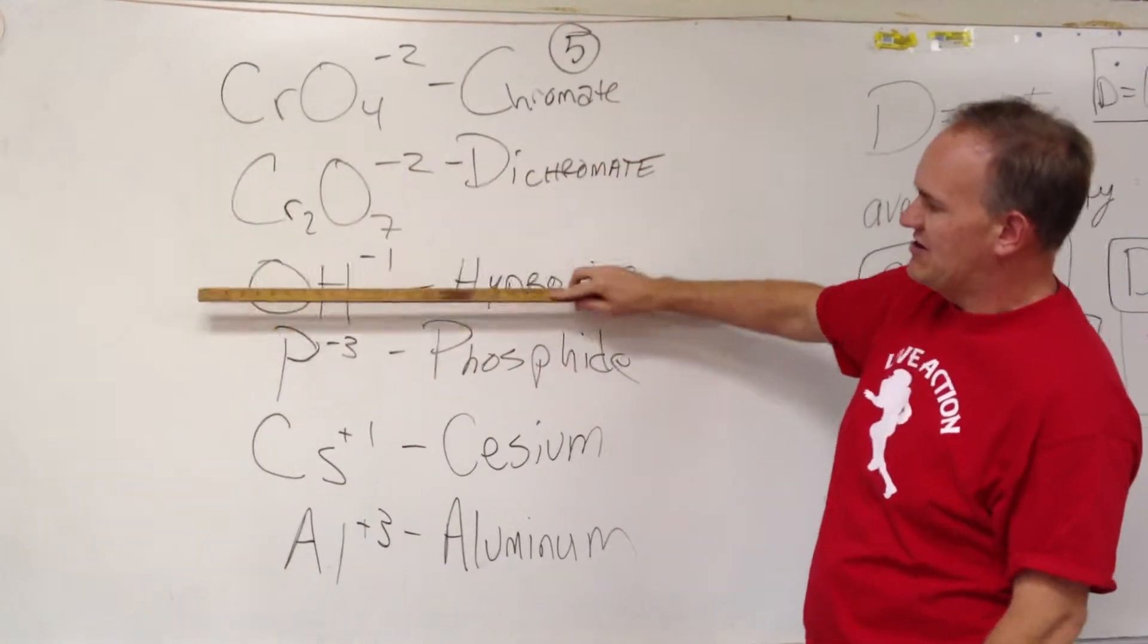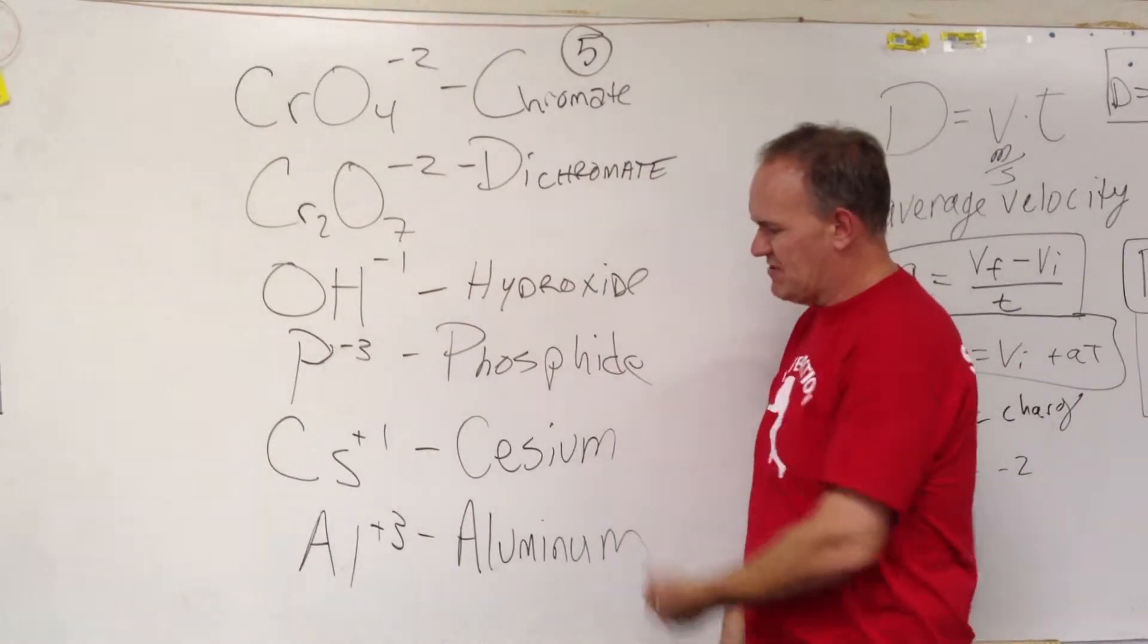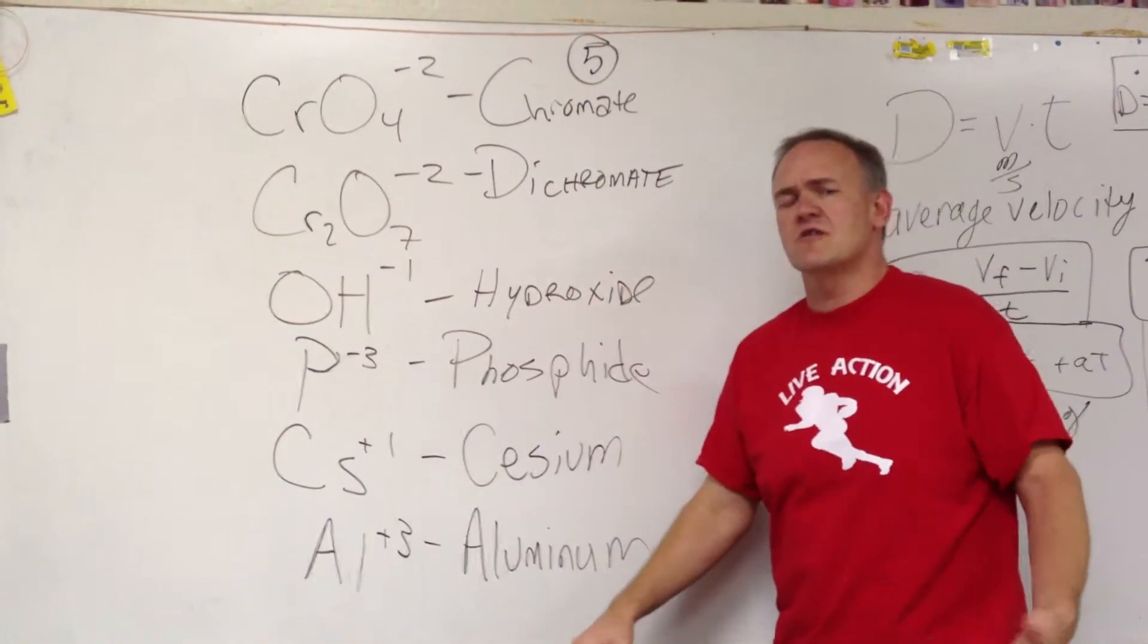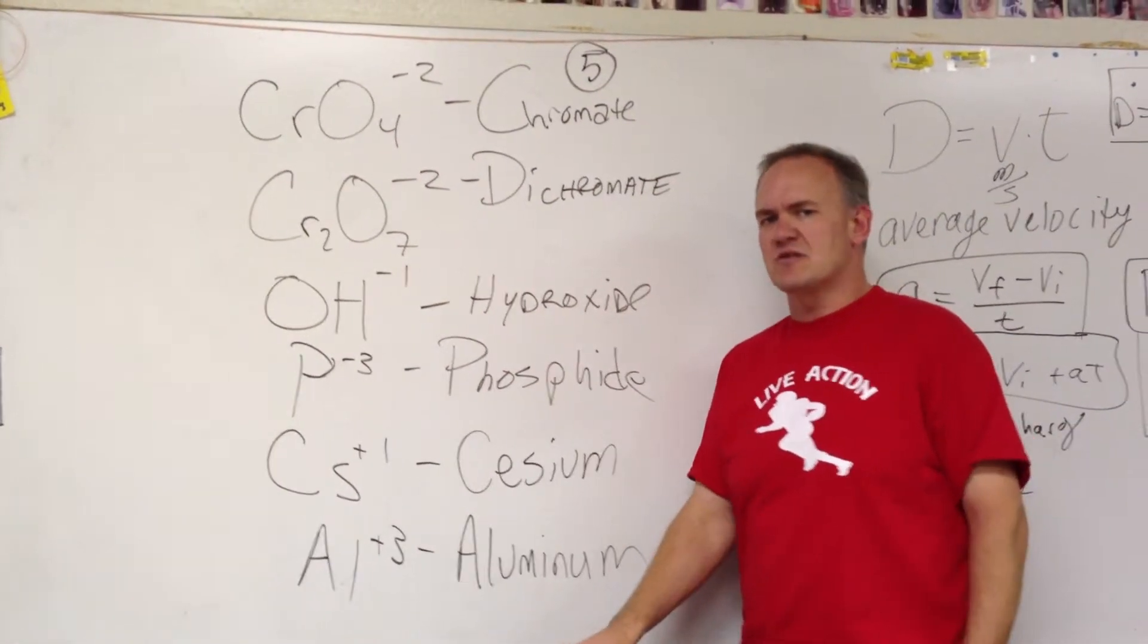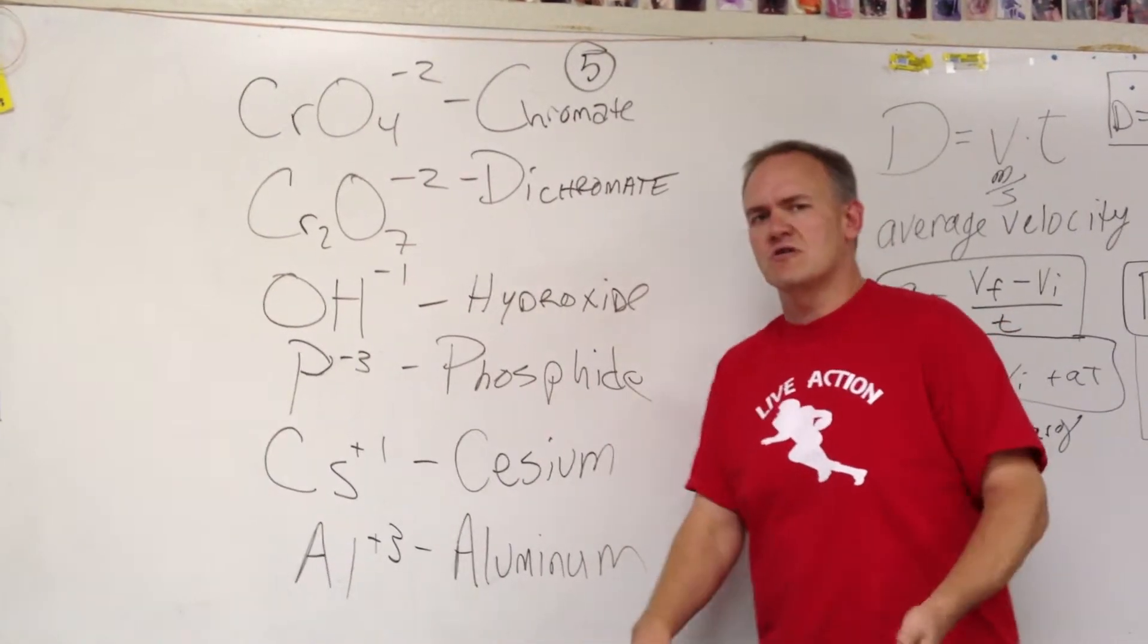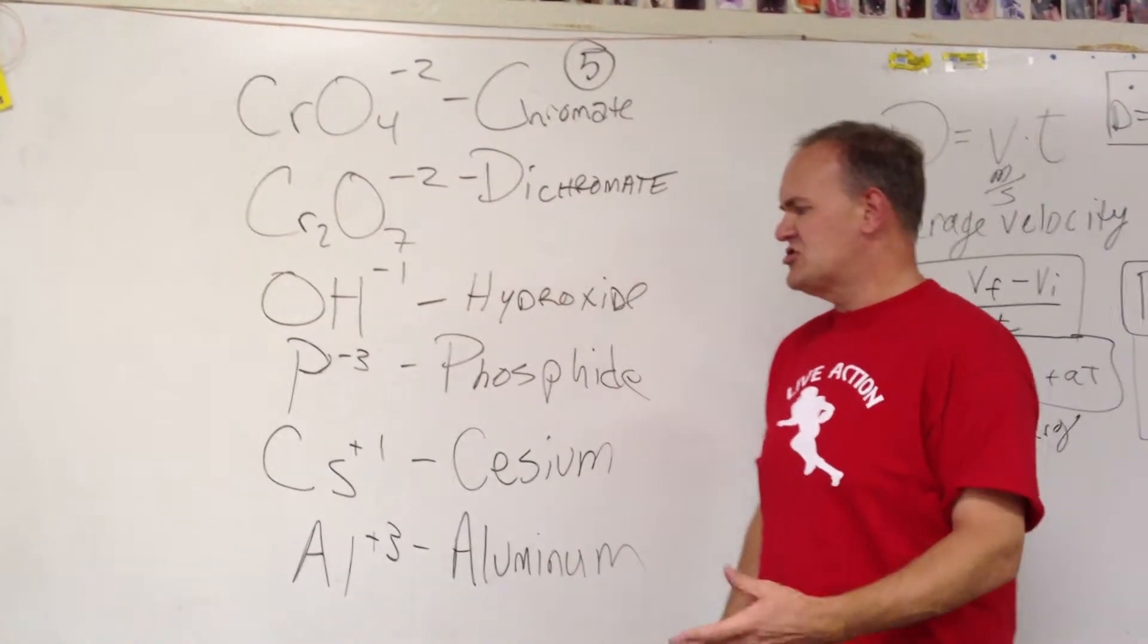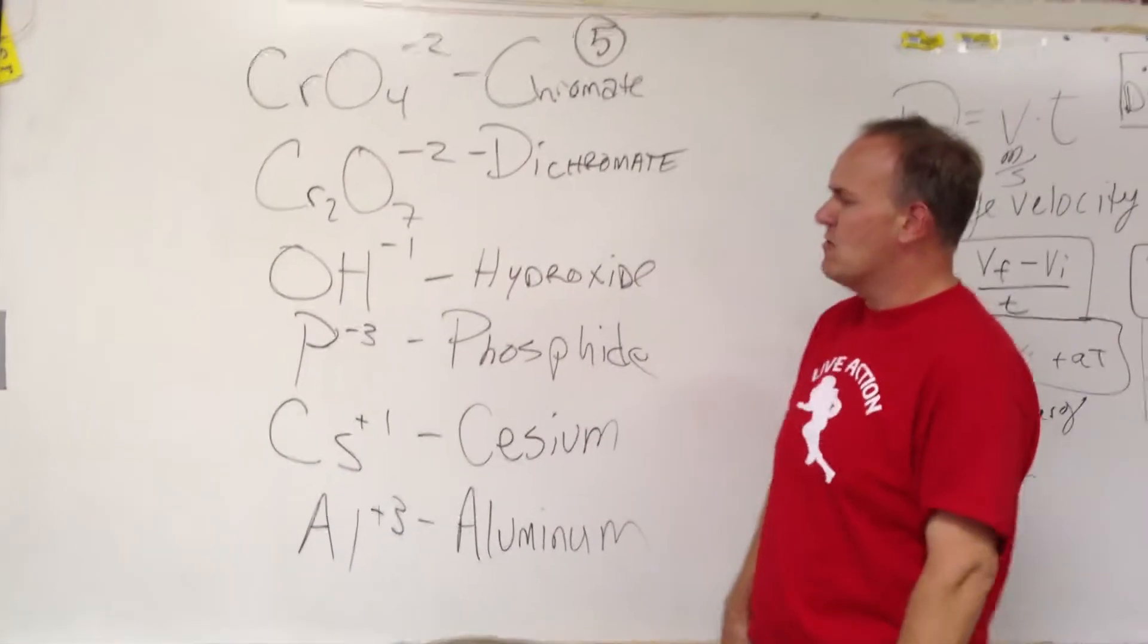We have chromate, dichromate, hydroxide, phosphide, cesium, and aluminum. Unfortunately, there are not a lot of great tips this time. This is just going to involve a little bit of memorization. So let's first knock off the easy ones.